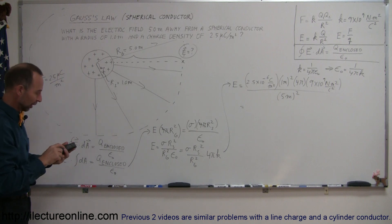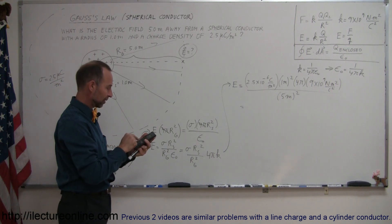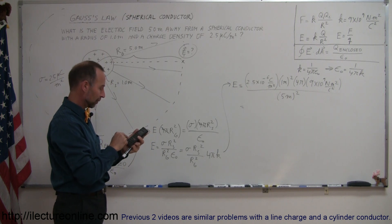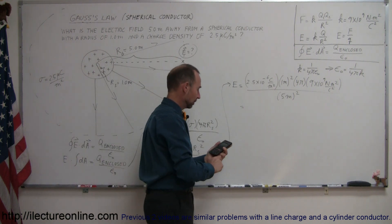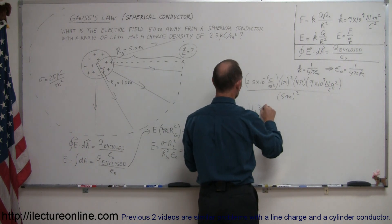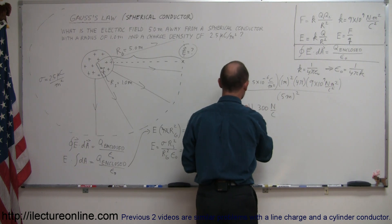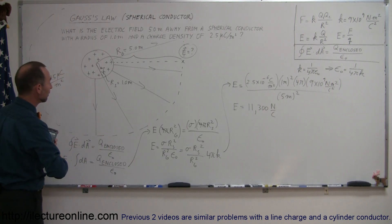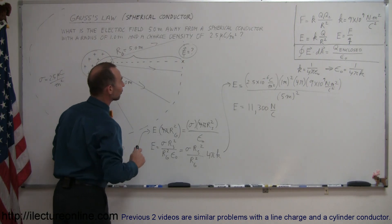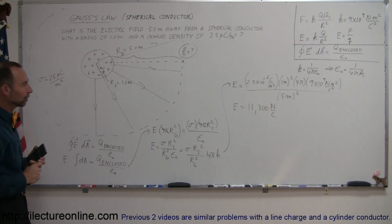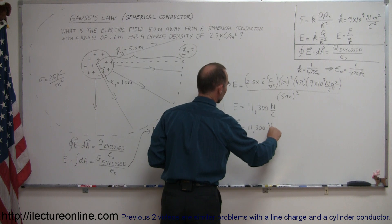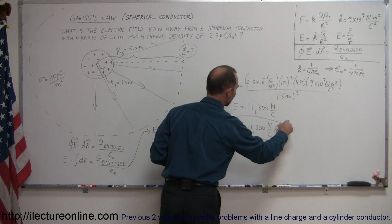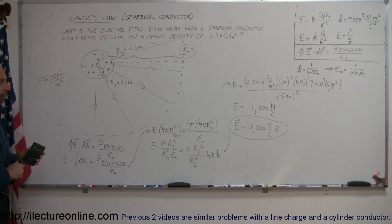Calculating: 2.5 times 10 to the minus 6, times 4π, times 9 times 10 to the 9th, divided by 25 — rounding off, we get 11,300 newtons per coulomb. That is the strength of the electric field at the Gaussian surface, which was strategically placed at the distance of interest. The field is radially outward in all directions, so E equals 11,300 newtons per coulomb in the radial direction outward — a three-dimensional radial direction.